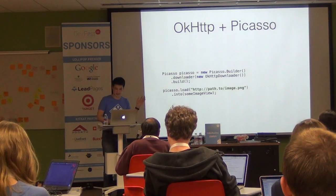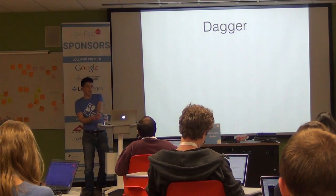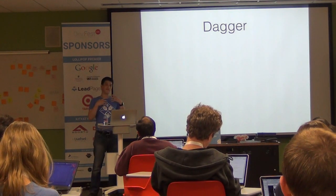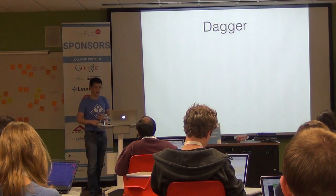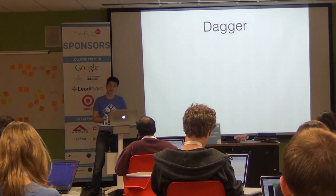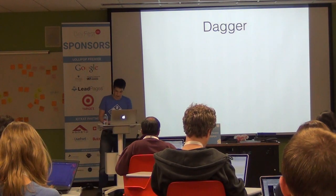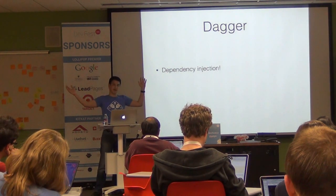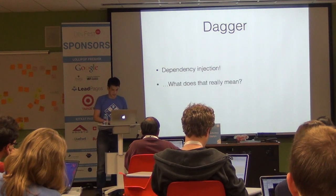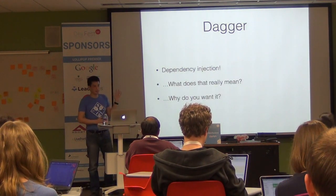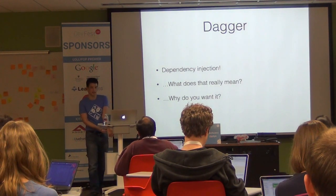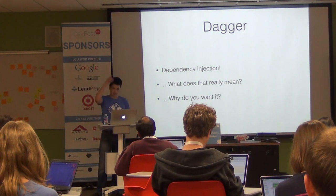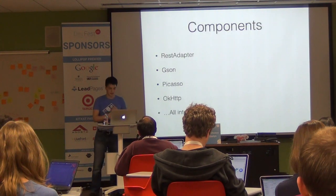Dagger is more code-oriented — about how you organize everything. Dagger is a library that does dependency injection, which is a term you've probably heard and thought sounded really complicated. Dependency injection is kind of like dynamic programming in that it sounds big and scary but is actually very simple. Let me circle around to explain why you might care about it.